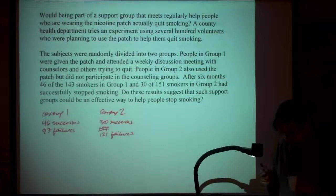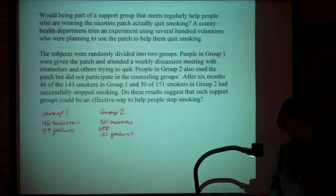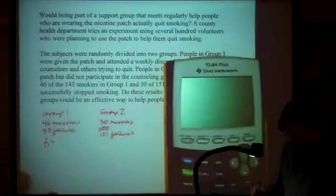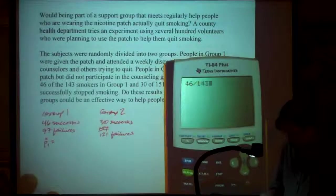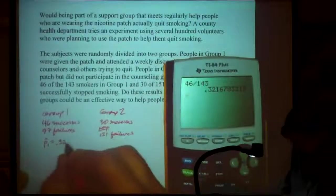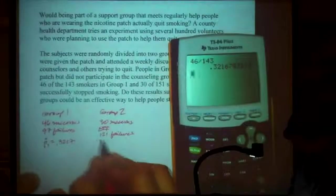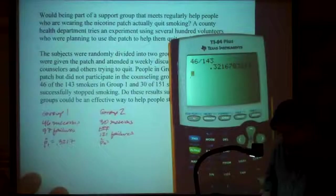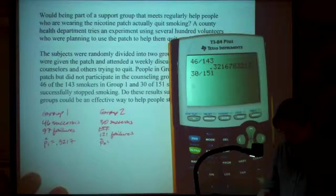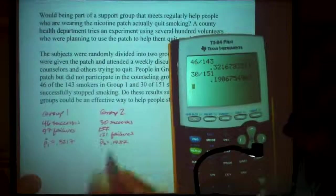So we've met our conditions. So now what we need to do is, well, shoot, first off, we have to calculate our P-hats. So what is P-hat-1? P-hat-1 is, I've got 46 out of 143. That looks like .3217. And P-2-hat is 30 out of 151, and that gives me .1987.